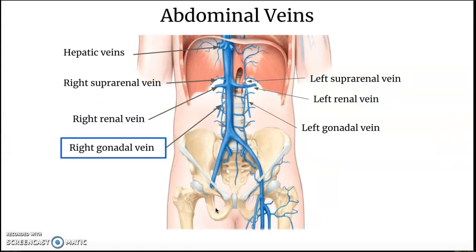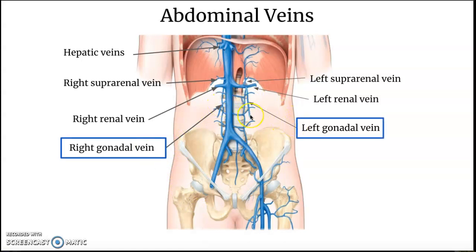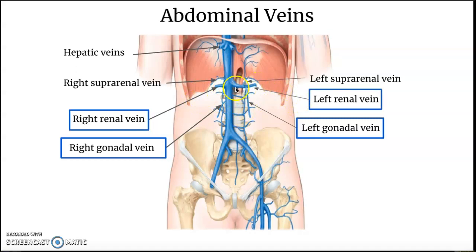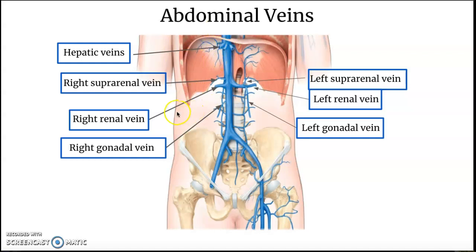For the abdominal veins, we have the right and left gonadal veins, the right and left renal veins, and the right and left suprarenal veins. Importantly, opposite to the arteries, the right suprarenal vein drains directly into the inferior vena cava, while the left suprarenal vein drains into the left renal vein. We also have hepatic veins draining the liver.